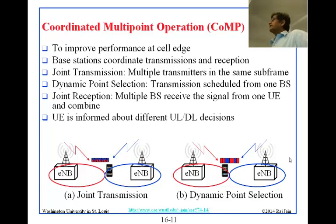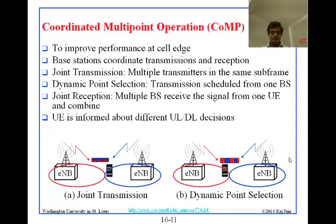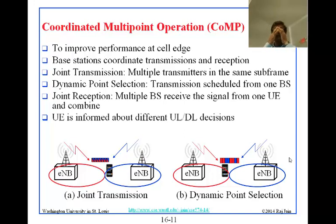In the other coordination method, different frames are for different cells — you see red and blue separately, only red, only blue, and so on. In either case, they coordinate what is called the resource block. If I use one resource block, you do not want to use that same resource block, at least not at the edge — though I can use it near my own cell.